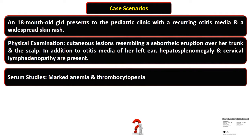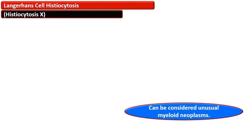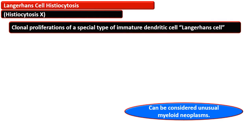The serum studies show marked edema and thrombosis. Langerhans cell histiocytosis, which was previously known as histiocytosis X, can be considered an unusual myeloid neoplasm. It is actually a clonal proliferation of a special type of immature dendritic cells — the Langerhans cells.